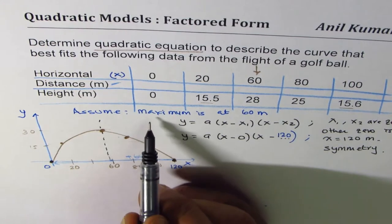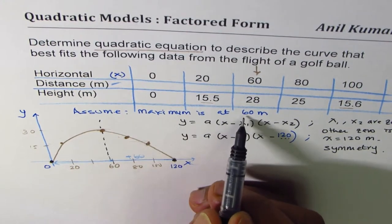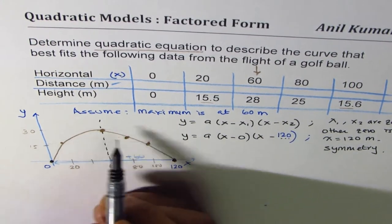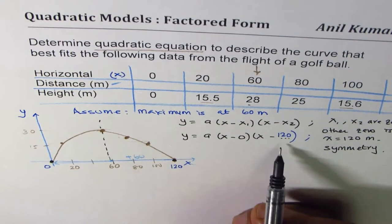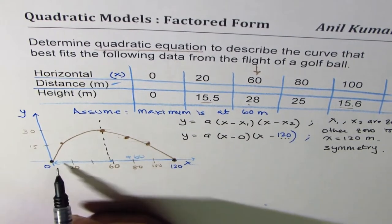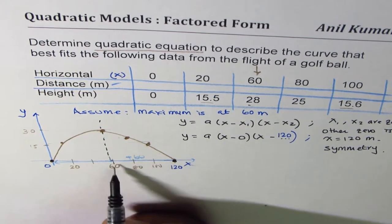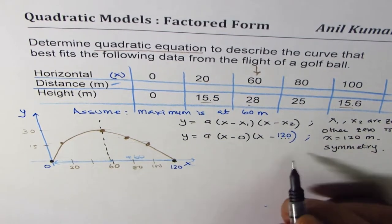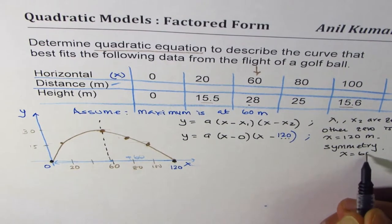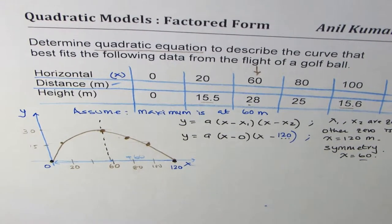To confirm: the maximum height of 28 occurs at 60 meters. Since one zero is at x = 0, which is 60 away from the axis of symmetry at x = 60, the other zero must also be 60 away on the other side — at x = 120. That is how we determine the second zero.